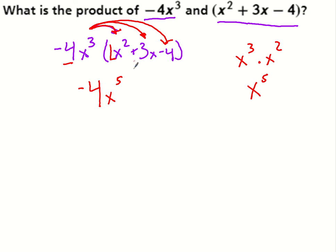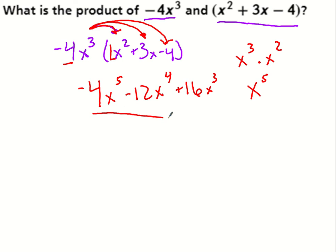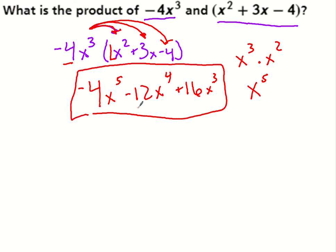So, negative 4 times 3 is negative 12, and x to the third times x is x to the fourth. Negative 4 times negative 4 is positive 16. x to the third — there's nothing else there, so that's just x to the third. And I'm done. Nothing else to do.